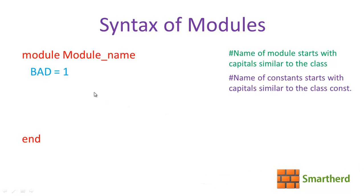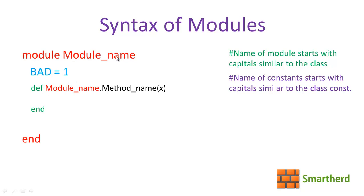Next, what is the syntax of defining a method in a module? The syntax is: def, space, module name — the same name as the module you defined — followed by a dot operator, then followed by a method name. It is user-defined, you can write whatever you want: my_method, method1, method2, and so on. It can also take a parameter, which is optional.